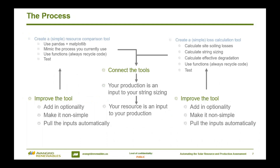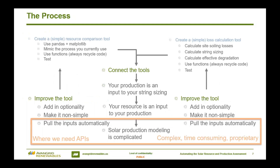For example, we know that production is an input to our string sizing, and our resource is an input to production. But you run into a problem: solar production modeling is complicated. And this is where APIs come in, or PVlib. If you hit a process that is complex, time-consuming, proprietary — one that you would normally use third-party software to complete — you should look and see if that third-party offers an API, because that way you don't have to change your methodology. You can still use those tools; you just use them through Python.